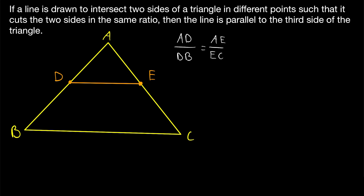Now, it turns out the converse of the basic proportionality theorem is also true, and that's what we'll be proving in today's lesson. The converse of the theorem states that if a line is drawn to intersect two sides of a triangle in different points, such that it cuts the two sides in the same ratio, then the line is parallel to the third side of the triangle.